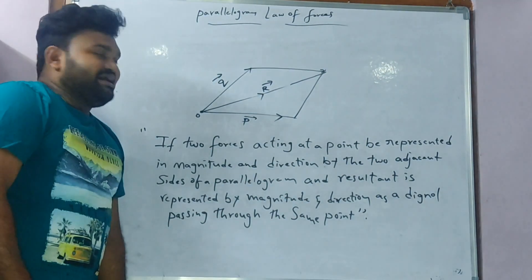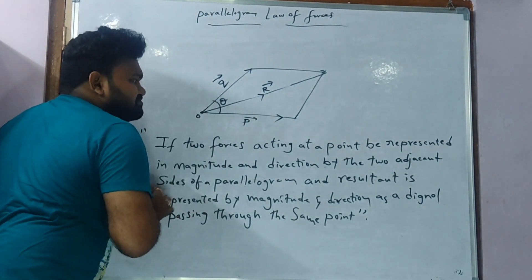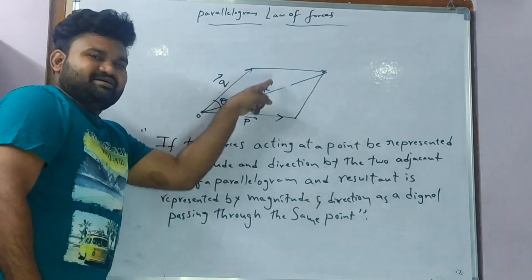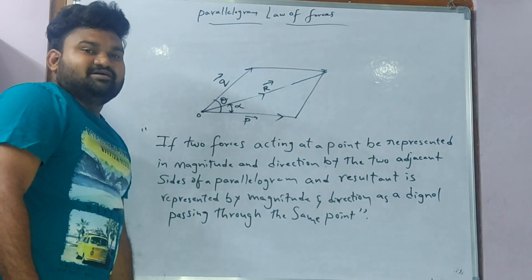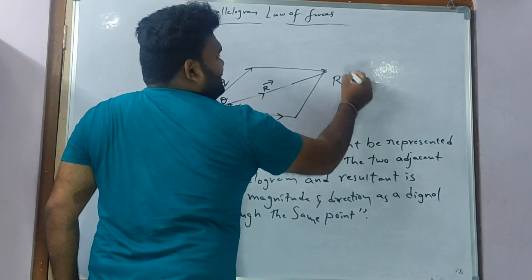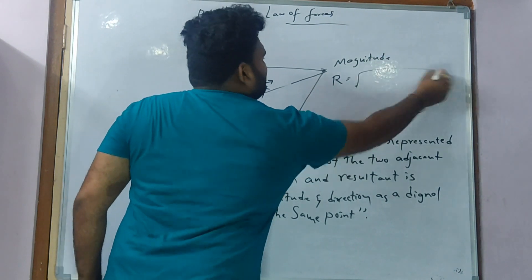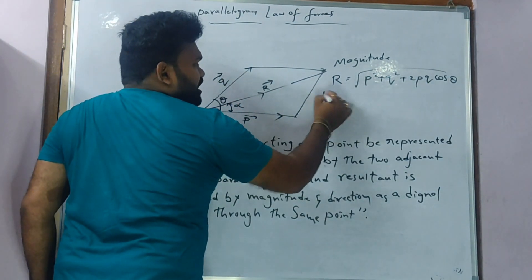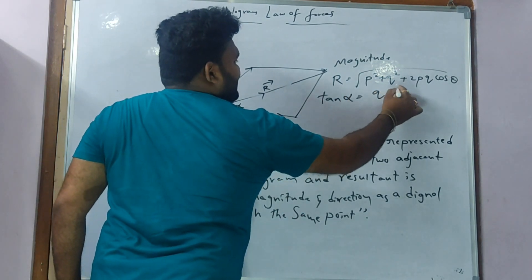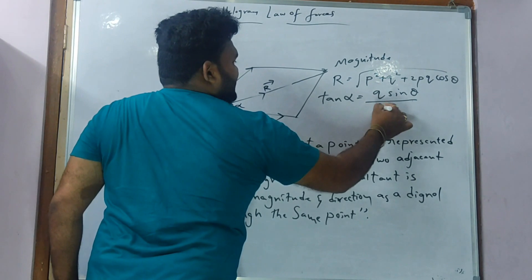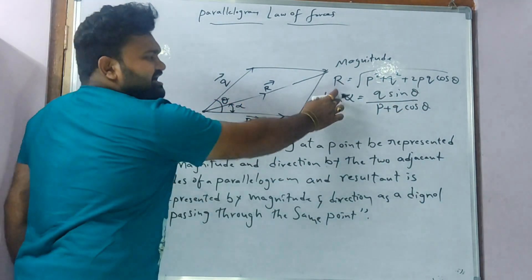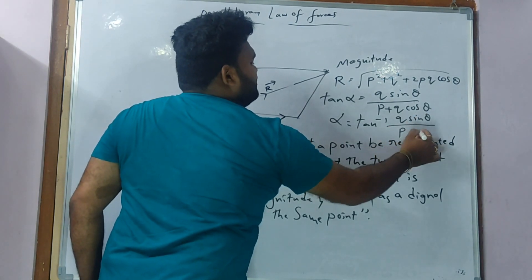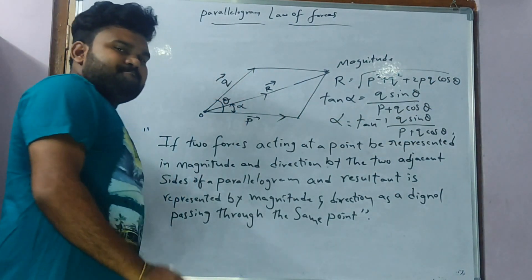So, of course, the resultant has the magnitude and direction. The direction is alpha. So the formula is: R is equal to — magnitude R is equal to root over P squared plus Q squared plus 2PQ cos theta. This is the magnitude formula. The direction formula is: tan alpha is equal to Q sin theta divided by P plus Q cos theta. So, tan alpha equals tan inverse of Q sin theta over P plus Q cos theta. This is the Parallelogram Law of Forces.